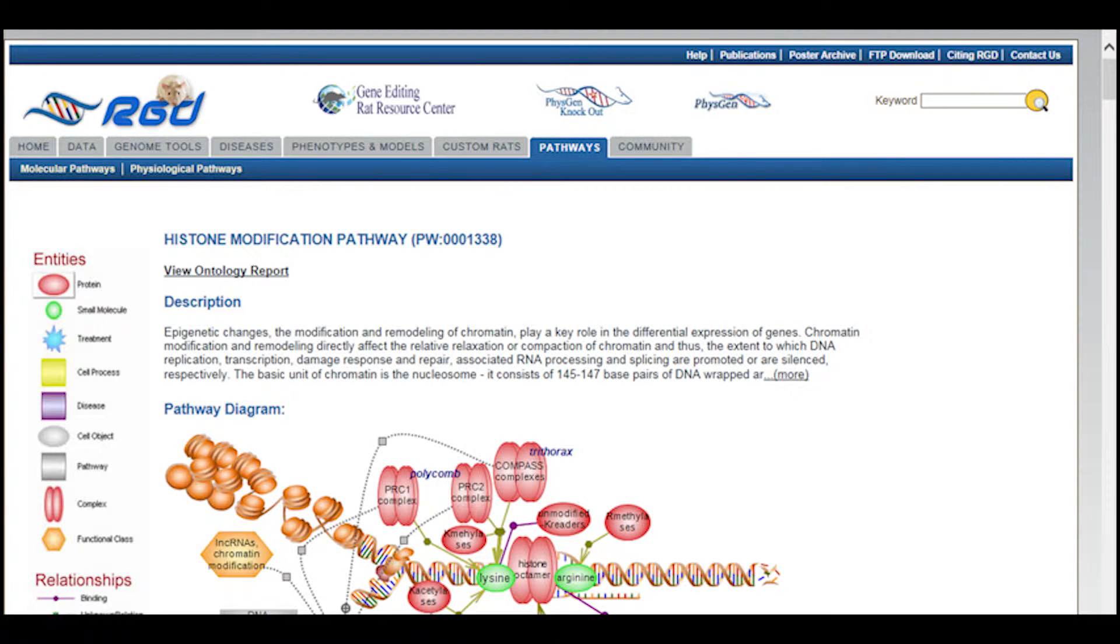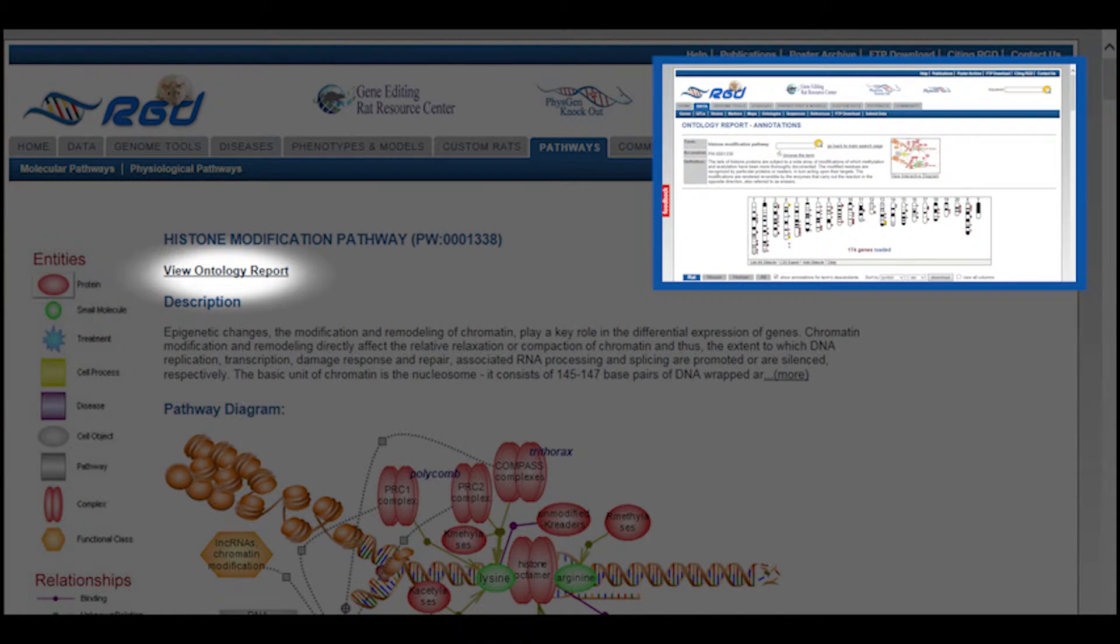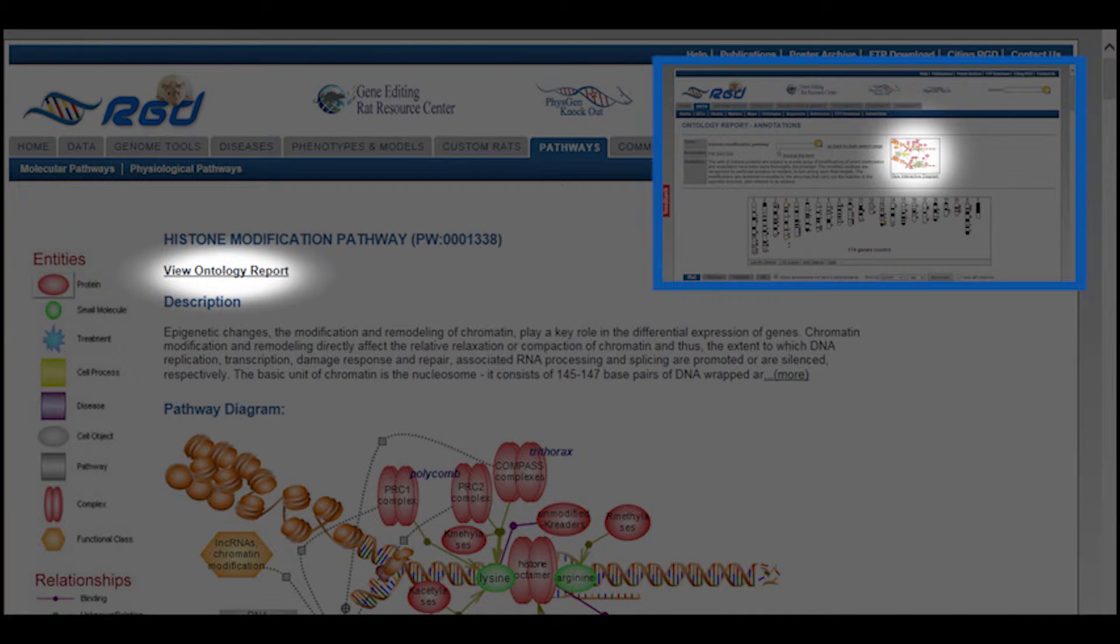At the top of the page, you will see the option to view the ontology report for the pathway. This opens another tab or window on your browser so you can easily toggle back and forth between the diagram and the ontology report. On top of the ontology report page is a thumbnail of the pathway diagram, which again links to the diagram page.